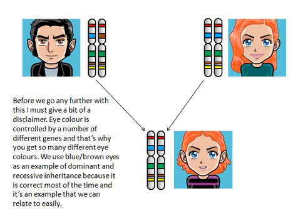Let's talk about recessive and dominant. Before I go any further though, I just want to tell you about eye colour and make a disclaimer. Eye colour is actually controlled by a number of different genes, and that's why you get so many different shades — not just blue and brown, but green, grey, hazel, and combinations. We talk about blue and brown eyes because it's an example of recessive and dominant that's correct for most of the time and easy to relate to.